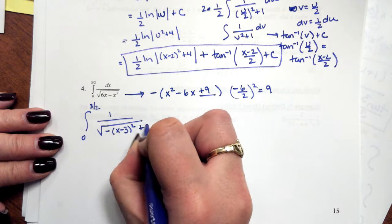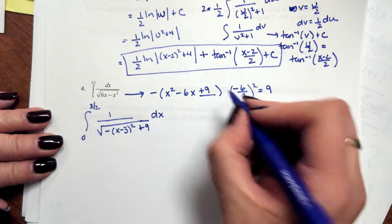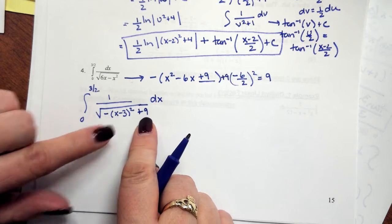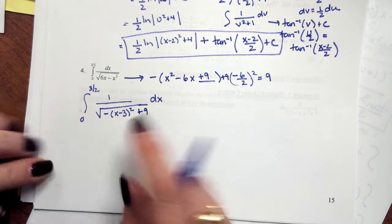I have to add 9 to keep this fraction equivalent. So it's a negative 9 plus 9. So now it's set up to look like your inverse sine. Remember this 9 has to be a 1, so I'm going to factor a 9 out of the denominator.